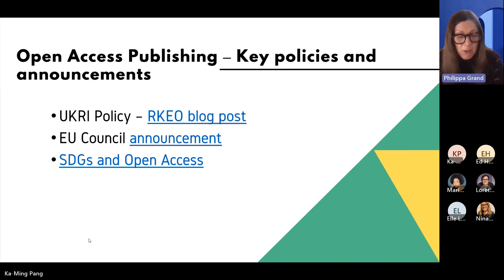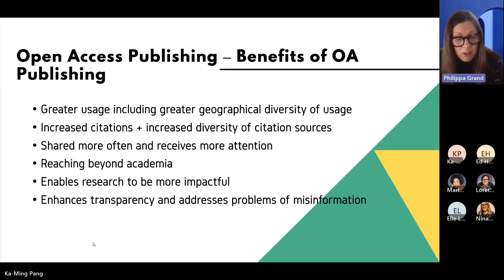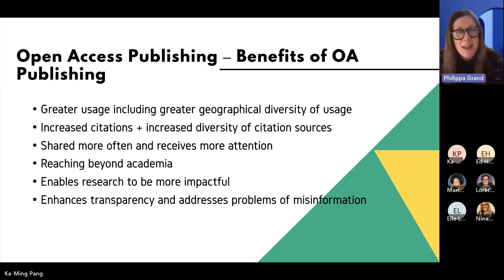But open access shouldn't just be thought of as something mandated that researchers have to comply with — there are real benefits too. Research has shown that publishing open access leads to greater usage of publications, including greater geographical diversity of usage, particularly in low and middle income countries. It also leads to increased citations compared to non-open access publications, and a greater diversity of citation sources by institutions, countries, regions, and fields of research, suggesting it's a particularly beneficial model for publishing interdisciplinary research.